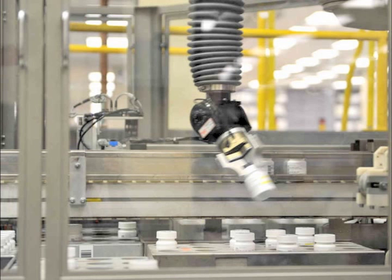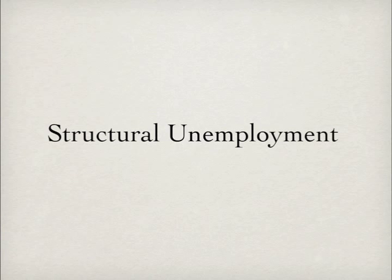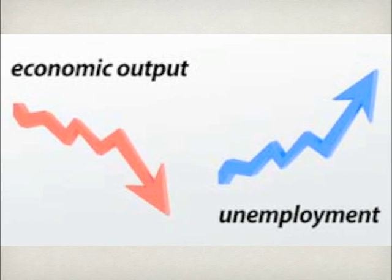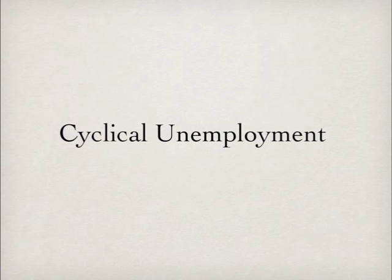A skilled craftsman becomes unemployed when a new machine does his job faster — this would be structural unemployment. As a result of contractionary fiscal policy, inflation will go down, but unemployment will increase — this would be cyclical unemployment.